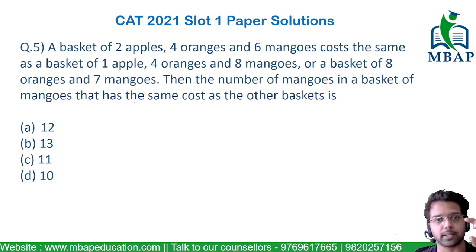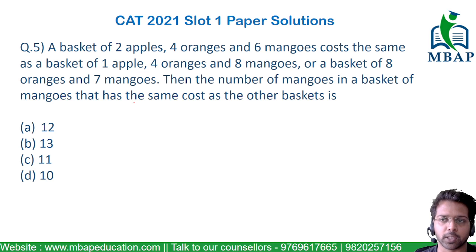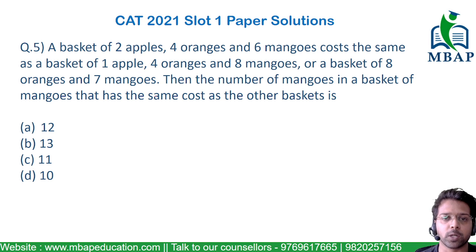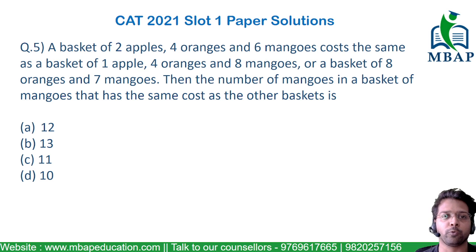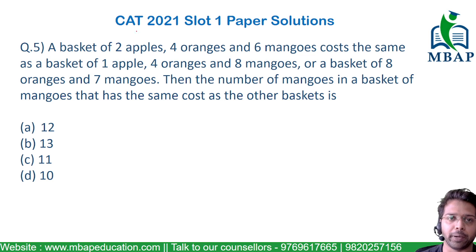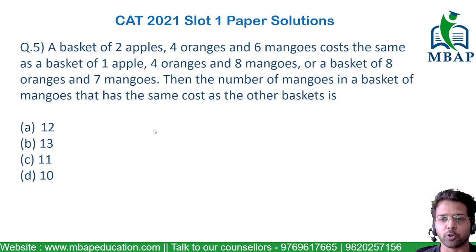So you've got 3 baskets: 2 apples, 4 oranges and 6 mangoes in one, and different combinations in the others. The goal is to convert everything into the form of mangoes — find the equivalent of apples to mangoes and oranges to mangoes. Let's first try to make this equation.